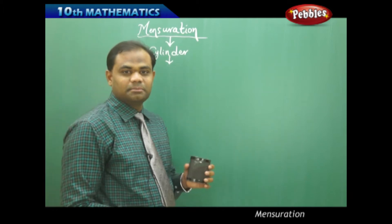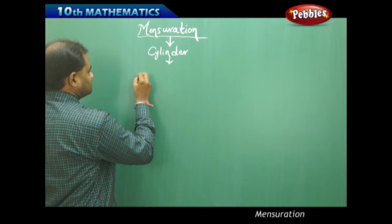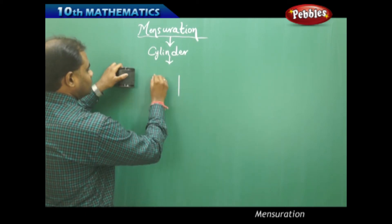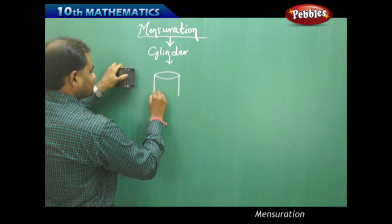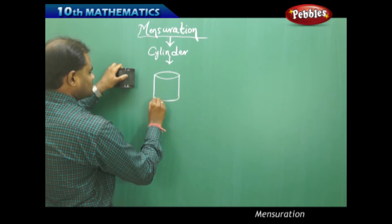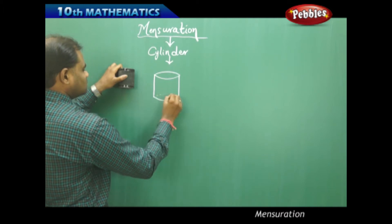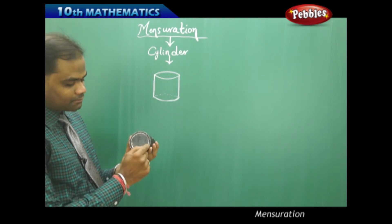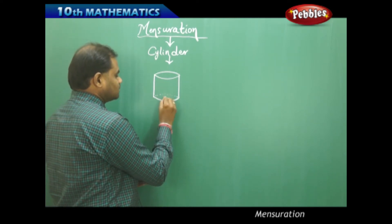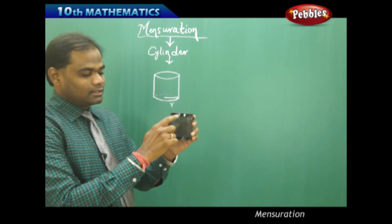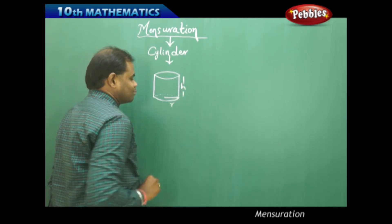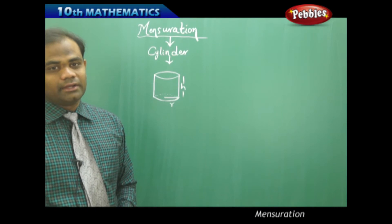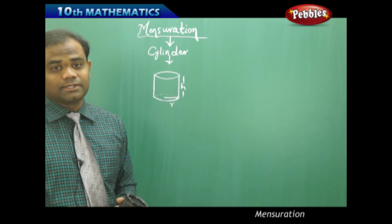Before we understand the cylinder, let me draw the diagram here. This is the top surface and this is the bottom surface — this is how we get the cylinder. The radius of this cylinder is R and the height of the cylinder is H. Based on these dimensions, let's find the lateral surface area and the total surface area.